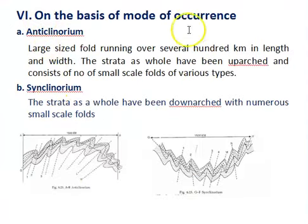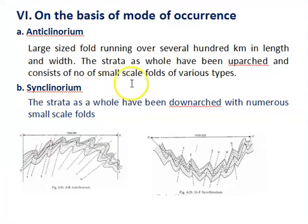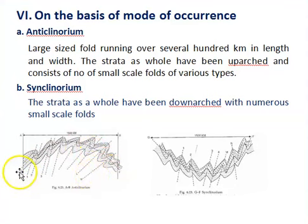This classification is on the basis of mode and scale. On this basis, folds are classified into anticlinorium and synclinorium. These are large-scale folds running over several hundreds to thousands of kilometers in length and width. In an anticlinorium, the strata as a whole are upfolded and consist of a number of small-scale secondary folds of various types. In a synclinorium, the strata as a whole are downfolded and consist of a number of smaller secondary folds.